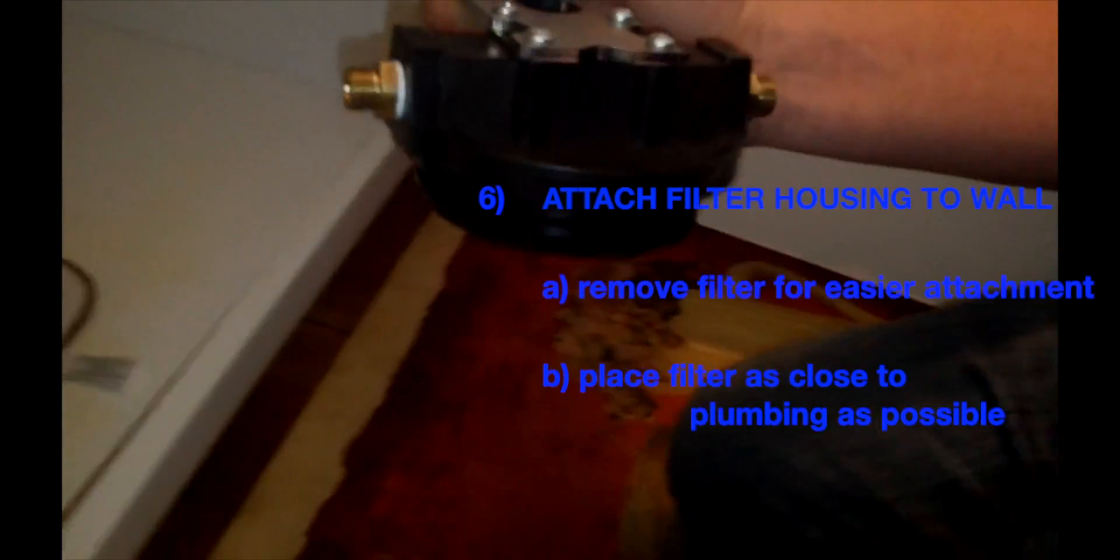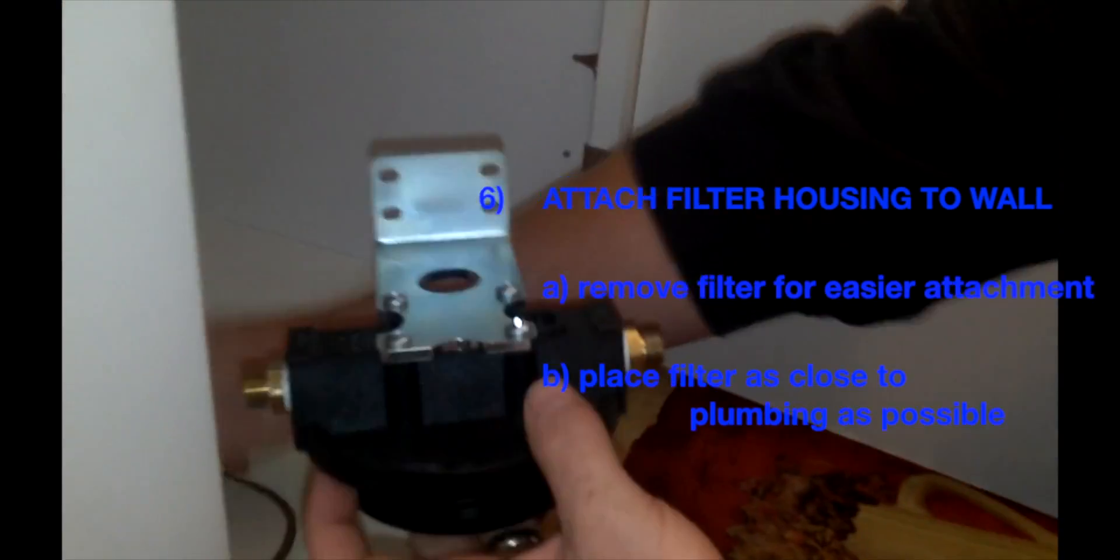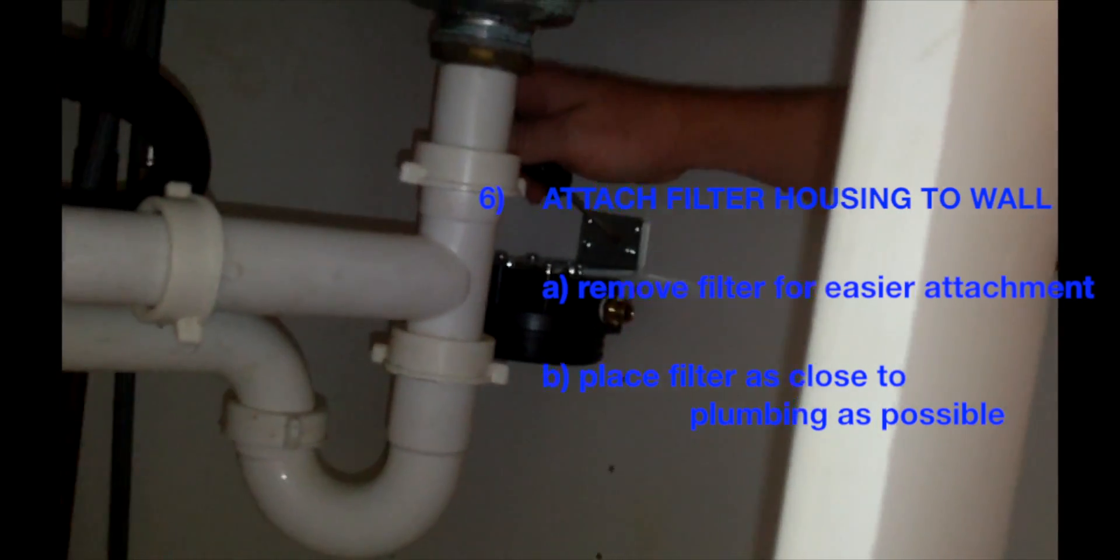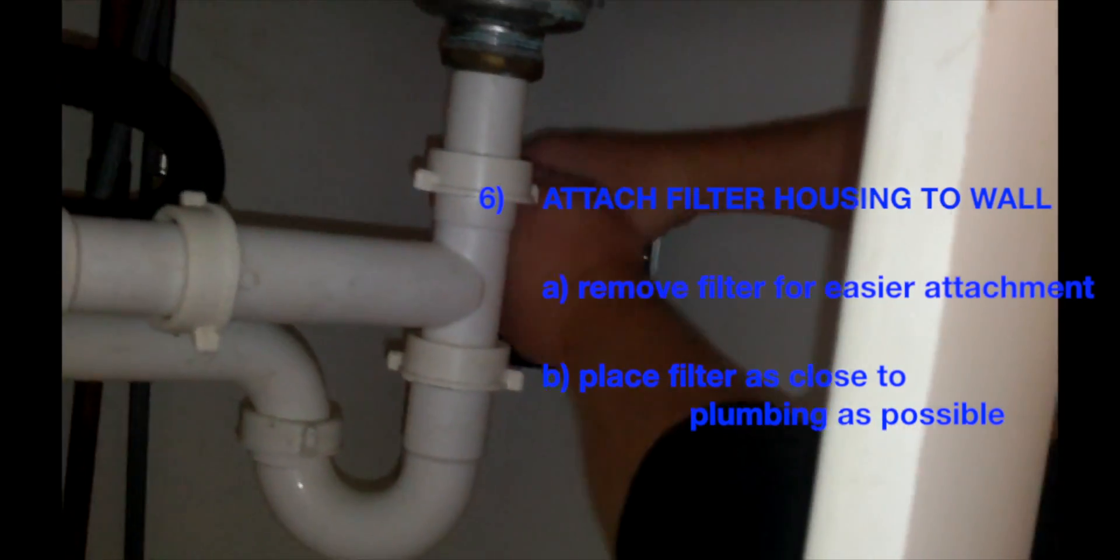Step six, here we come. It is much easier to attach the filter housing to a wall with the filter detached. For your convenience, place the filter as close to the plumbing as possible.